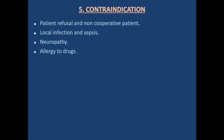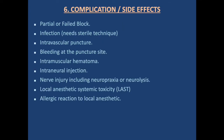Contraindications of median nerve block include patient refusal for regional anesthesia or if the patient is non-cooperative, local infection at the site of injection or sepsis, neuropathy as a relative contraindication from a litigation point of view, and allergy to the drug. Complications and side effects include partial or failed block, infection requiring sterile technique, intravascular puncture, bleeding at the puncture site, intramuscular hematoma, intraneural injection, nerve injury including neuropraxia and neurolysis, local anesthetic systemic toxicity if the dose is exceeded or drug is injected into a vein, and allergy to the local anesthetic.